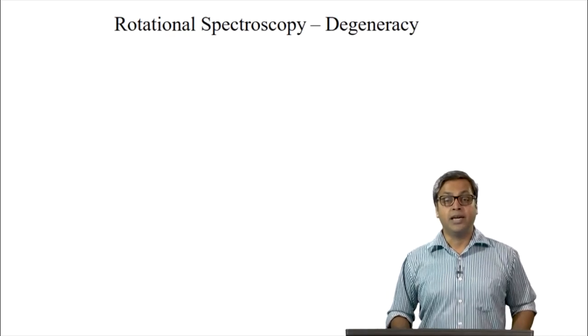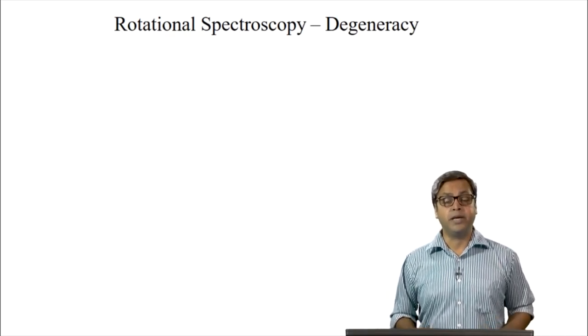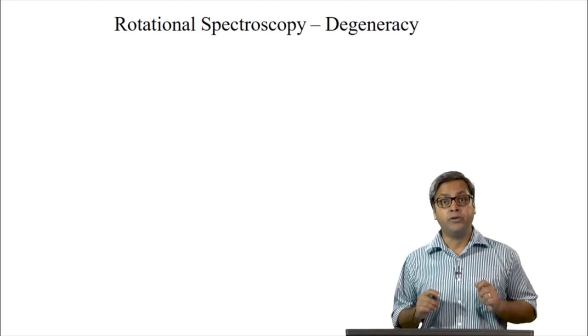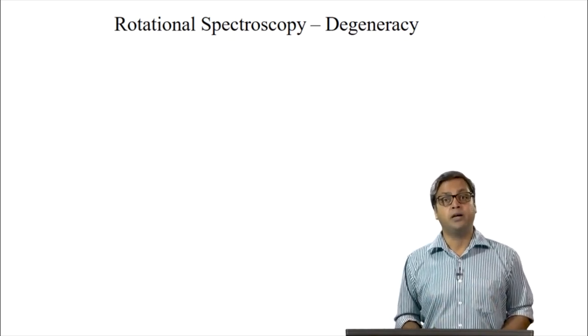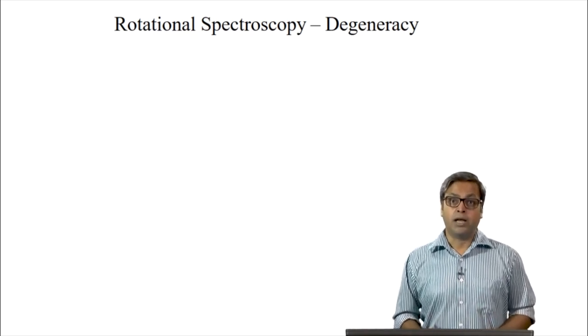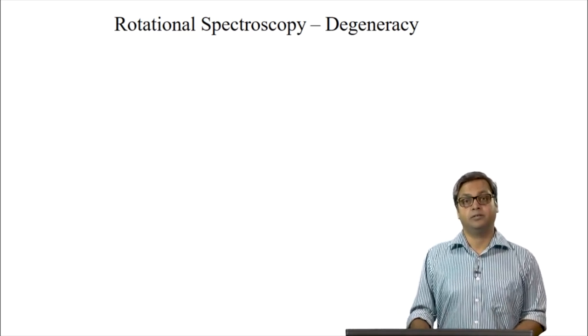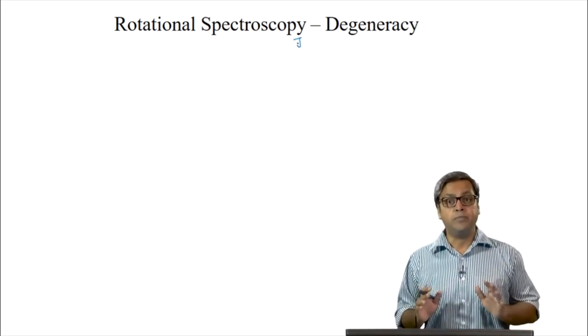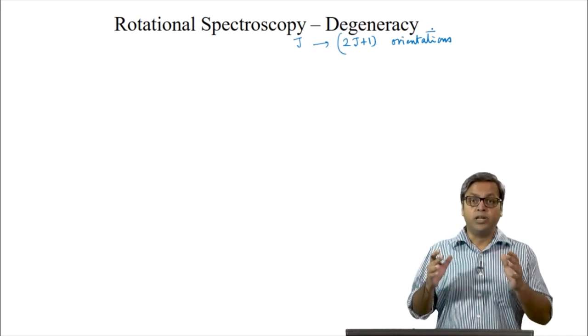Hello everyone. In the last lecture, we discussed about the space quantization. We saw that the diatomic molecule cannot arbitrarily orient itself with respect to the reference axis, but the molecule can only orient itself in certain directions. If one molecule is in the jth quantum level, then there are 2j plus 1 possible orientations, and these orientations all have the same rotational energy.